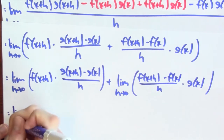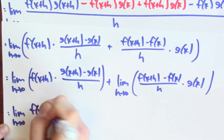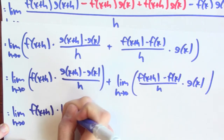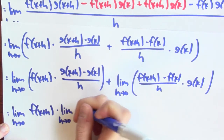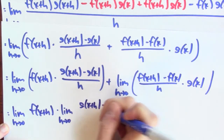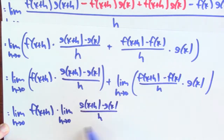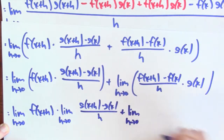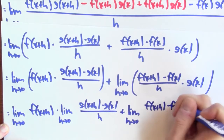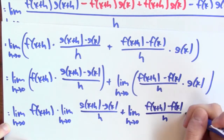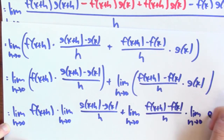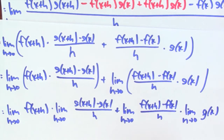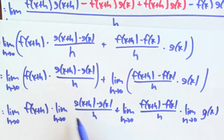Now I have limits of products, which are products of limits provided the limits exist. Let's rewrite these as products of limits. This gives the limit as h goes to 0 of f(x+h), times the limit as h goes to 0 of [g(x+h) minus g(x)]/h, plus the limit as h goes to 0 of [f(x+h) minus f(x)]/h, times the limit as h goes to 0 of g(x). We need to check that all these limits exist.